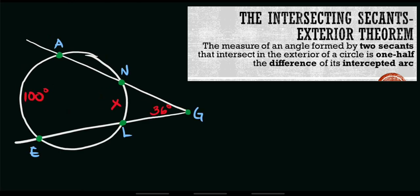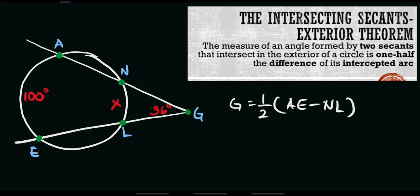Let's try to solve another given problem. We have angle G equal to 36 degrees. We have intercepted arc NL equal to x, and our second intercepted arc AE equal to 100 degrees. We will use the same formula to solve for the value of x. The value of angle G is half of the difference of its intercepted arcs — that is AE minus NL. Substituting: 36 degrees equals half of 100 degrees minus x.